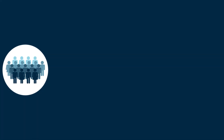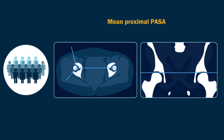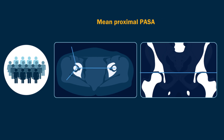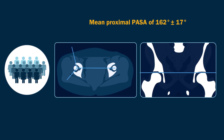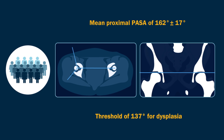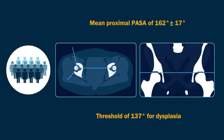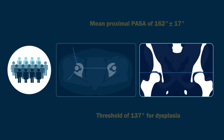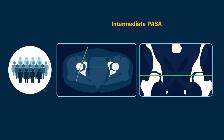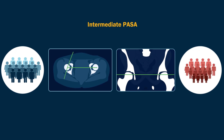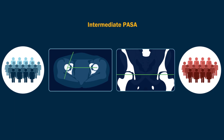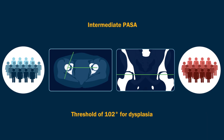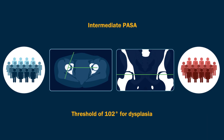In the control group, the mean proximal posterior ASA was 162 degrees plus or minus 17 degrees, resulting in a threshold of 137 degrees for dysplasia. The intermediate posterior ASA had the highest discriminatory ability to differentiate the groups, with a threshold value of 102 degrees.